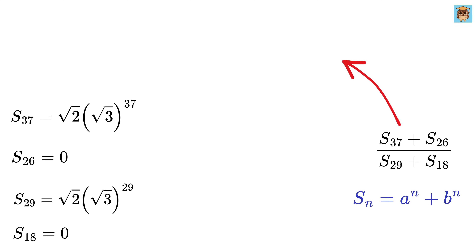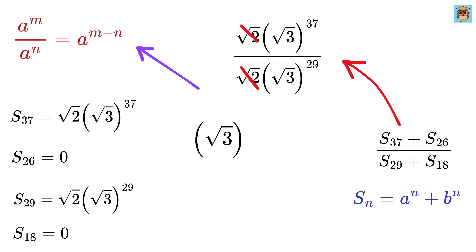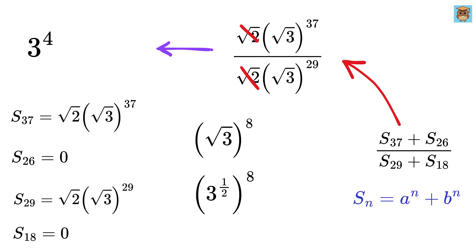So finally, the full ratio becomes root 2 times root 3 raised to 37 divided by root 2 times root 3 raised to 29. The root 2 terms cancel, and using the power rule, this becomes root 3 raised to 37 minus 29, or root 3 raised to 8. Root 3 is 3 raised to the half, and thus it will be 3 raised to the power of 8 by 2, or 3 raised to 4. This gives us the final answer as 81.